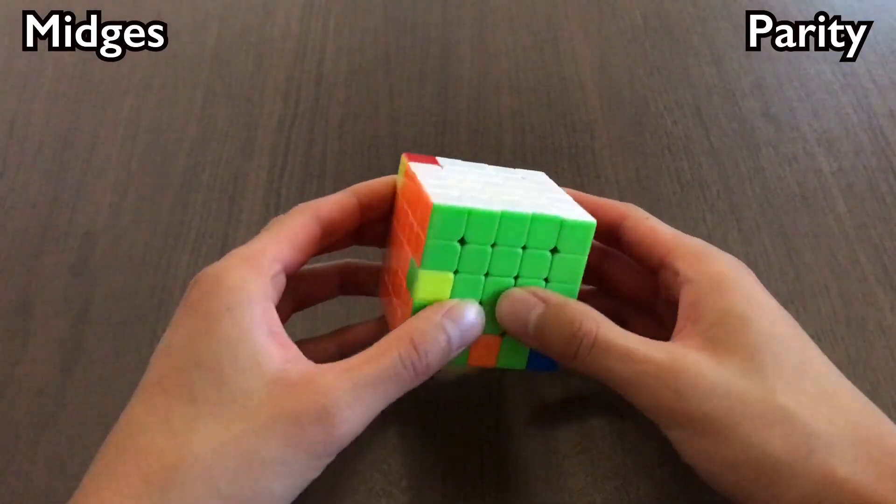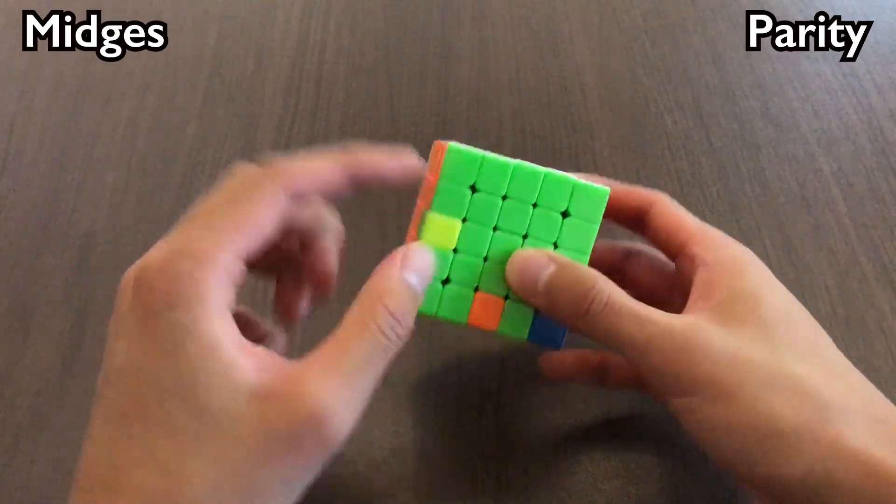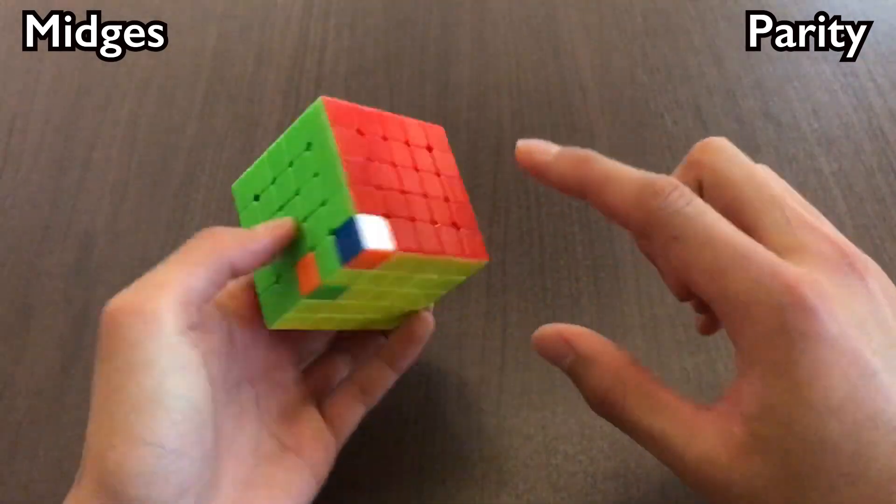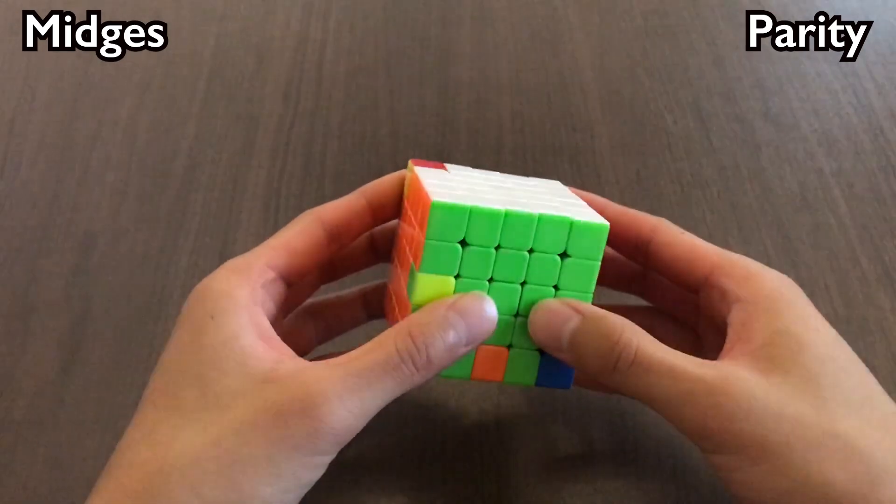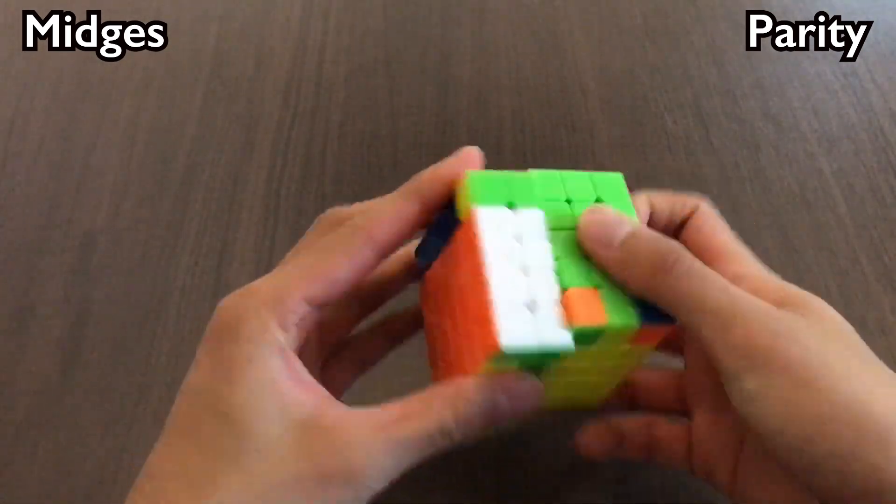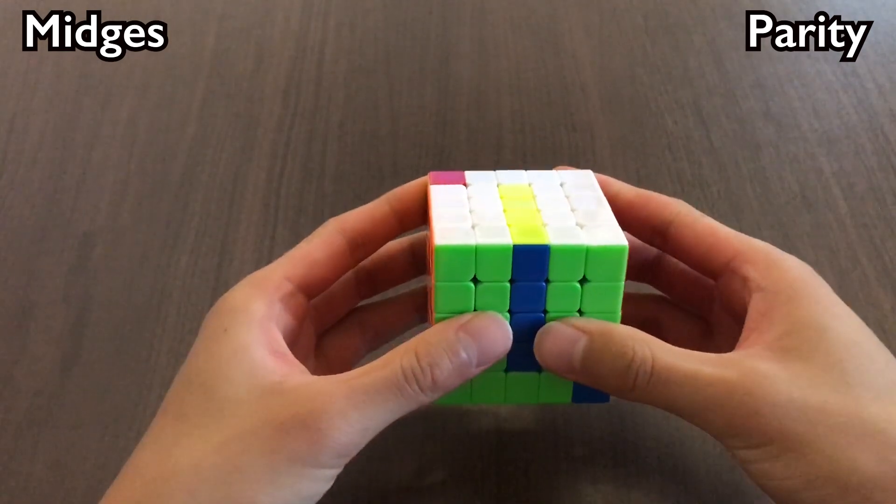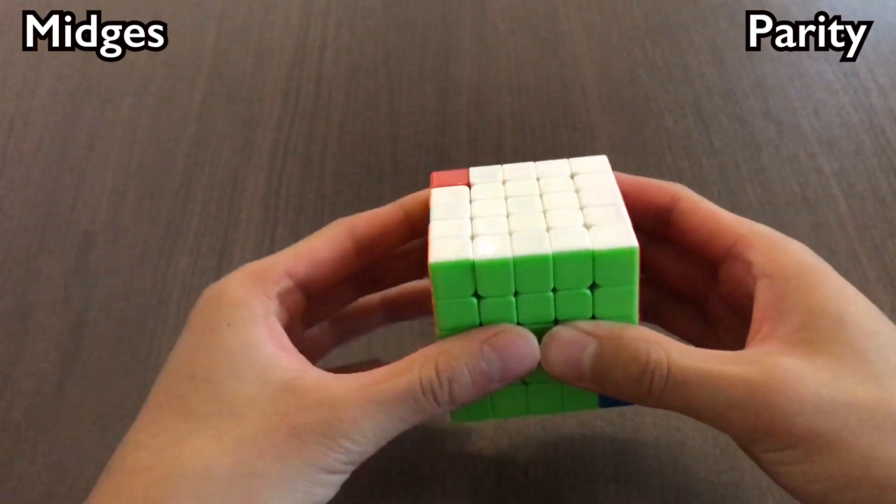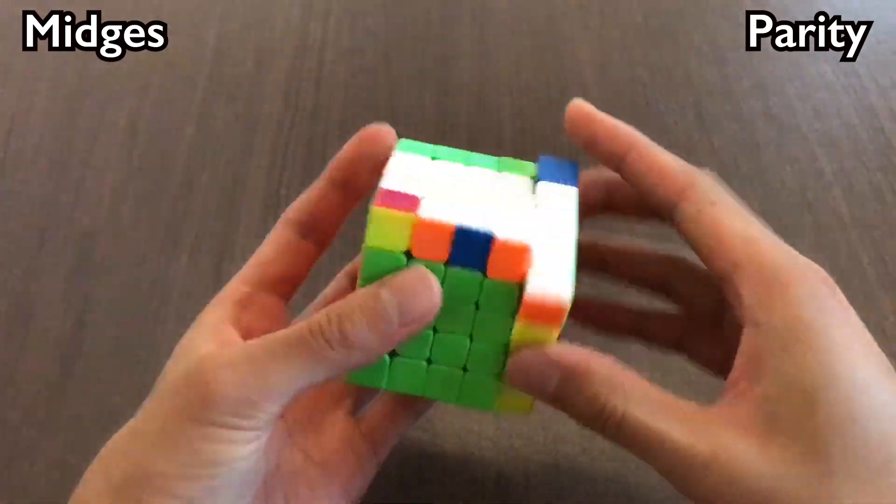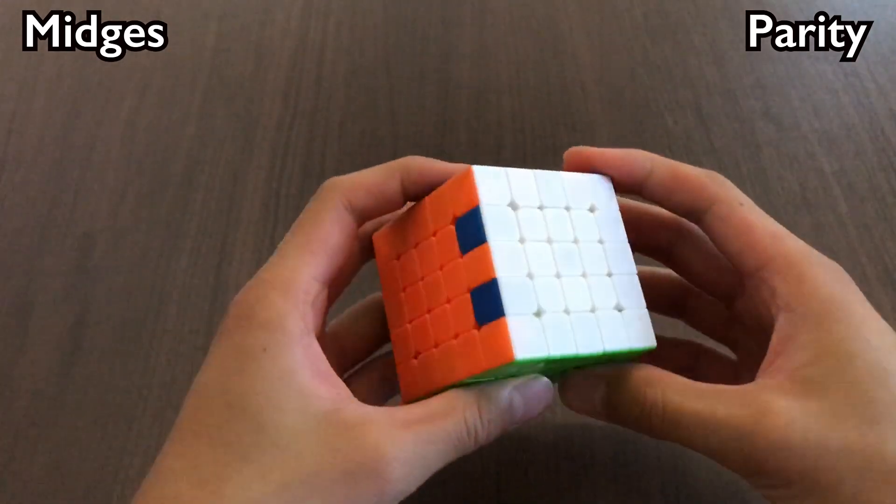Let's take a look at this scramble. For midges, we need to shoot to L. And for corners, this is our buffer, so we need to go to P. Here's how we're going to handle parity. First, we're going to solve midges. Next, we're going to do the midge parity alg. Then we're going to solve corners. And finally, we need to fix wings.